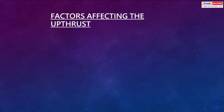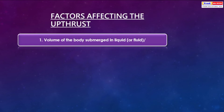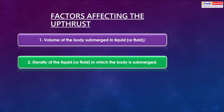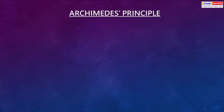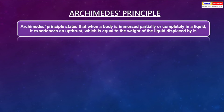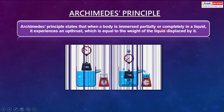Factors affecting the upthrust: first, the volume of the body submerged in the liquid or fluid; second, the density of the liquid in which the body is submerged. Archimedes' principle states that when a body is immersed partially or completely in a liquid, it experiences an upthrust which is equal to the weight of the liquid displaced by it.